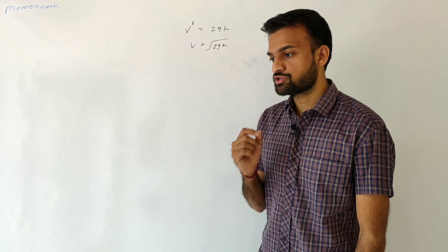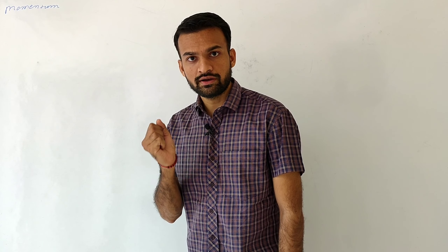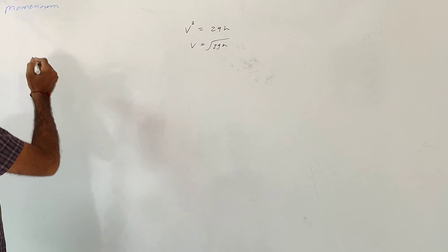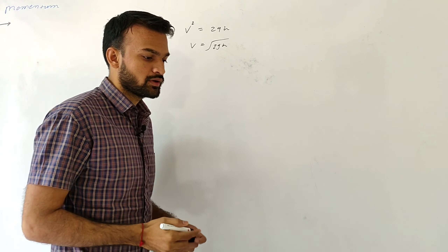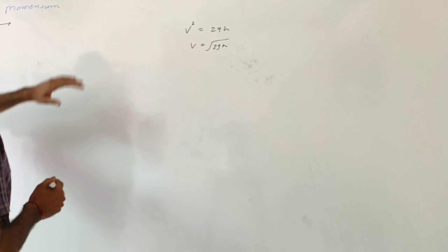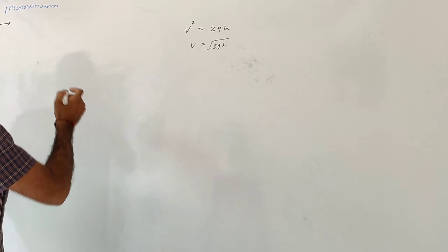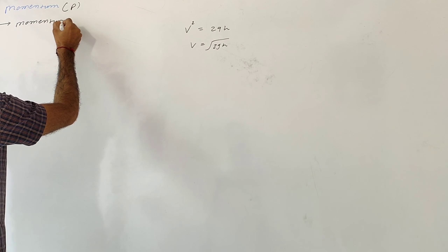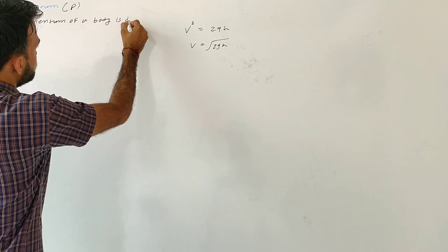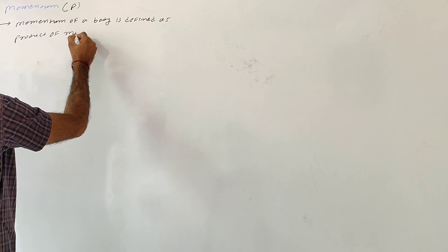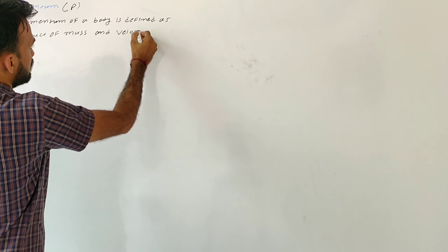To understand the combined effect of mass and velocity in motion, a new quantity called momentum is defined. Momentum shows the combined effect of mass and velocity of a body. Momentum is denoted by p.